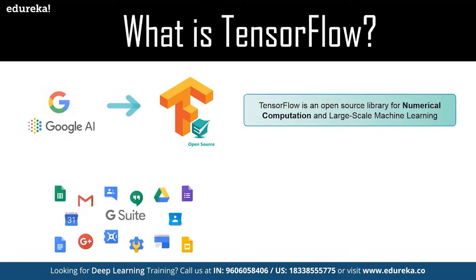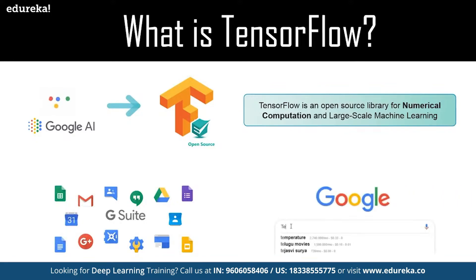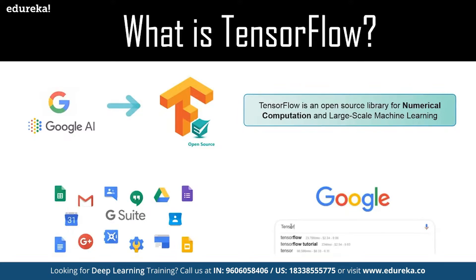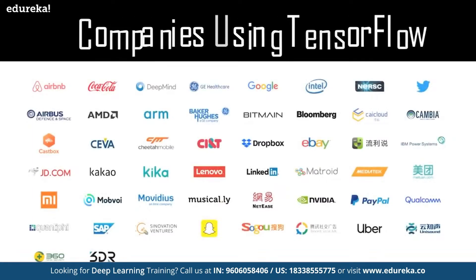Google uses machine learning in all of its products to improve the search engine, translation, image captioning, and recommendations. For example, Google users experience a faster and more refined search with artificial intelligence — if a user types a keyword in the search bar, Google provides a recommendation about what the next word could be.